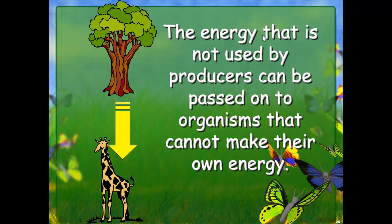The energy that is not used by the producer can be passed on to organisms that cannot make their own energy. The plant uses photosynthesis to make its own energy, uses most of it, and stores a little bit. That little bit that is stored can be transferred — for example, to a giraffe if the giraffe eats the leaves of the tree. That same energy is passed on to the next level.